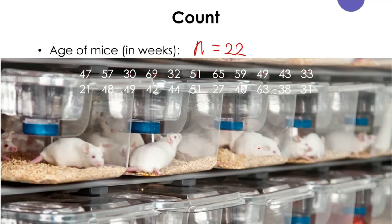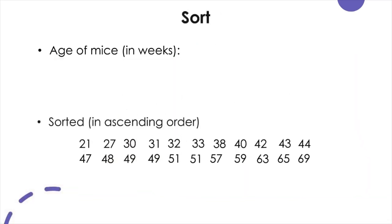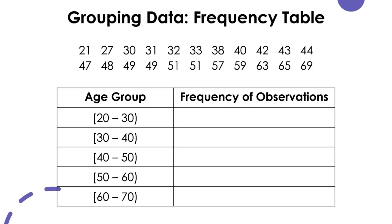Now we know how many data we have for the variable age of mice. The next step is to sort this data to see what's going on. Let's sort it in ascending order. Once we sort them this way, we can see that the youngest mouse is 21 weeks and the oldest mouse is 69 weeks. When you have a large data set, it is sometimes more useful to split the data into a manageable number of groups or categories and count how many data would occur in each group.